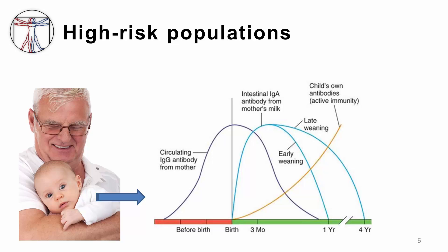The infant immune system is immature compared to the adult immune system, and this has a critical impact on susceptibility to respiratory viral infections. There is a general naivety of the infant immune system — the lack of prior exposure to pathogens leads to a lack of immune memory. Maternal IgG antibodies passed to the infant via the placenta in utero are generally depleted by approximately six months postpartum, leaving infants susceptible to infection at that time.